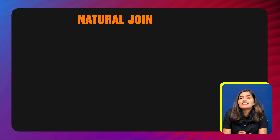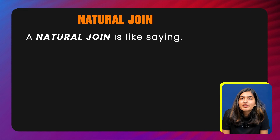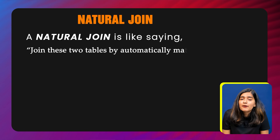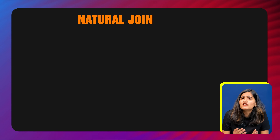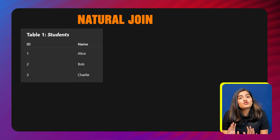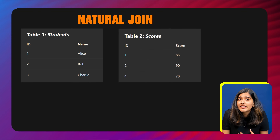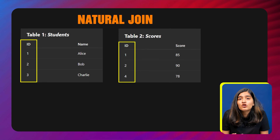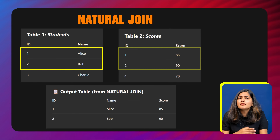Now moving ahead with natural join — it's like a shortcut for inner join when the columns to join on have the same name. A natural join automatically matches all columns that have the same name across both tables. You don't have to tell SQL which columns to join on; it just finds the matching column names and uses them. For example, imagine two tables: a students table with columns id and name, and a scores table with columns id and score. A natural join on these tables will automatically join them using the id column since it's common to both, giving you a combined table with id, name, and score — but only for students whose id appears in both tables.